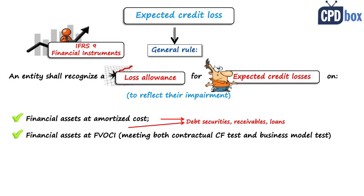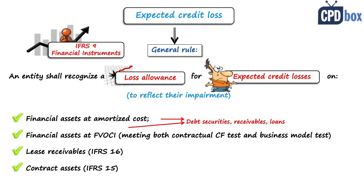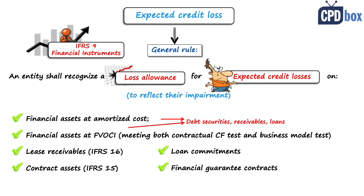We shall also recognize a loss allowance related to lease receivables as defined in IFRS 16, contract assets as arranged by IFRS 15, and loan commitments and financial guarantee contracts. So the whole range of financial assets is subject to loan loss allowance.